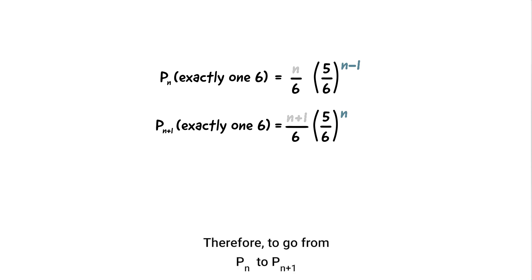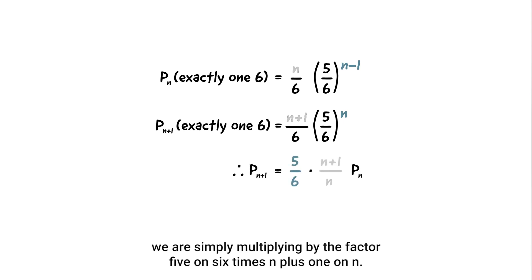Therefore, to go from pn to pn plus one, we are simply multiplying by the factor five on six times n plus one on n.